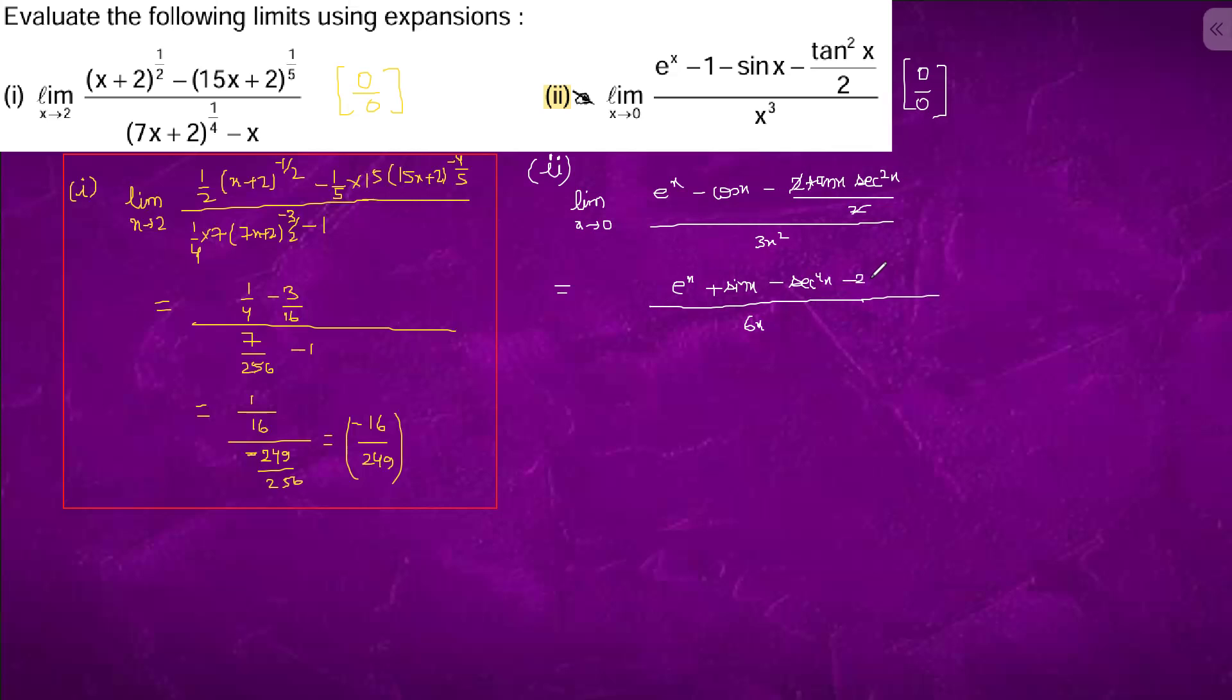Rewriting: limit x tending to 0. At x equals to 0 it is 0 by 0. What we can do is that we have e to the power x minus 4x upon 6x plus sin x minus tan square x sec square x upon 6x.